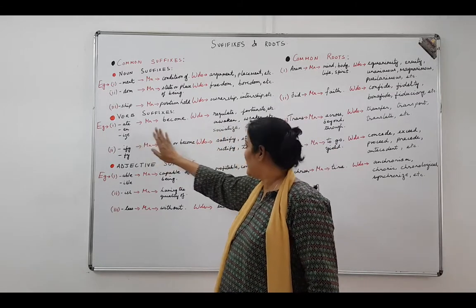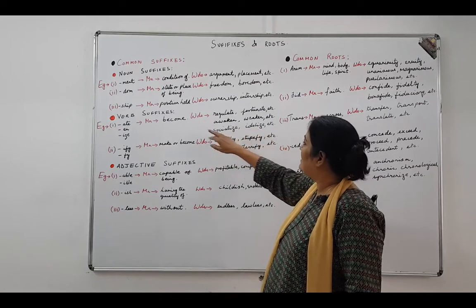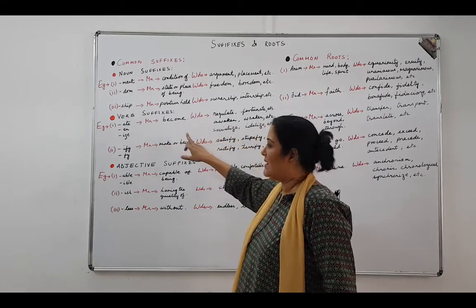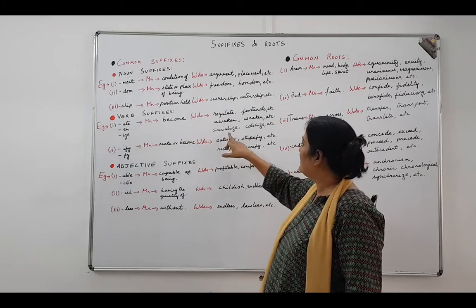Then I have i-z-e, which gives you socialize, idolize. So when you start or think to become a social person, you socialize. These are the verb suffixes.